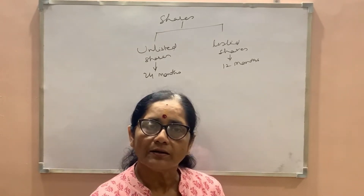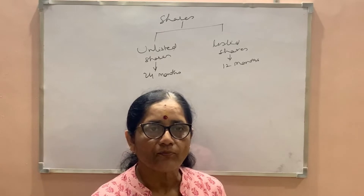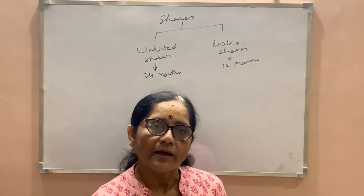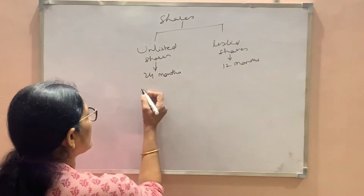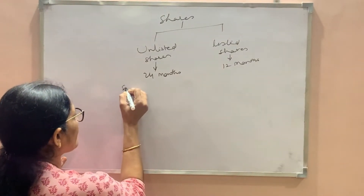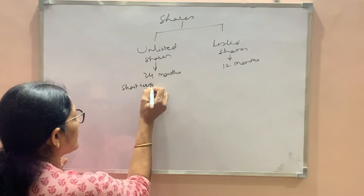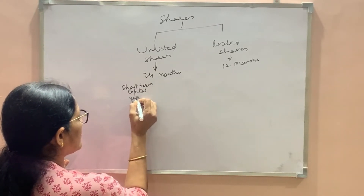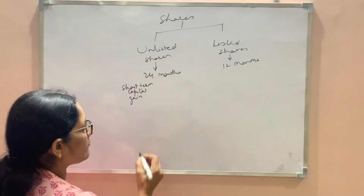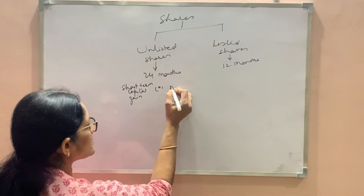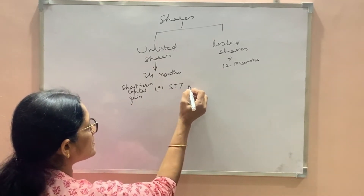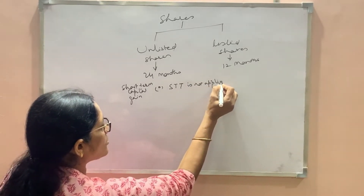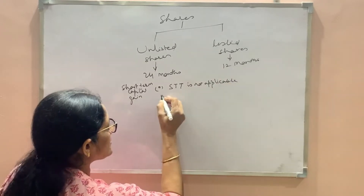Now we are going to see the treatment of tax on the resultant long-term capital gain and short-term capital gain. First of all, we are looking at short-term capital gain. We have two circumstances: first, security transaction tax is not applicable, and second, security transaction tax is applicable.